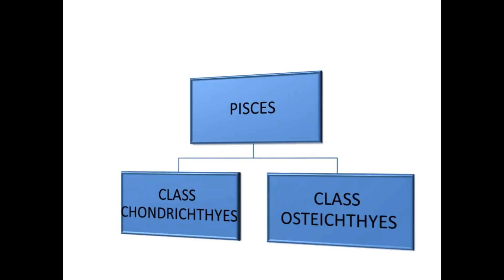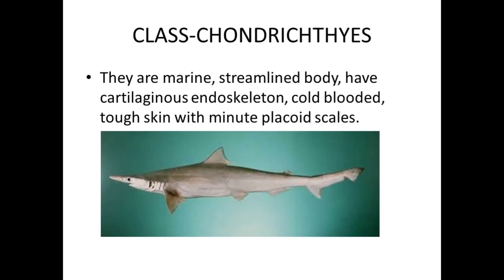Superclass Pisces is divided into two classes: Chondrichthyes and Osteichthyes. Now about class Chondrichthyes — they are marine and they have a streamlined body, tapering at both ends, and have a cartilaginous endoskeleton. That is their main specialty. They are cold-blooded.